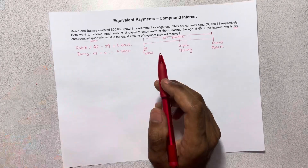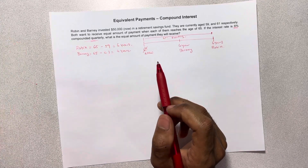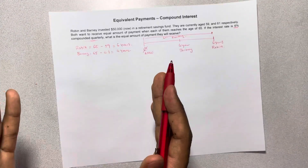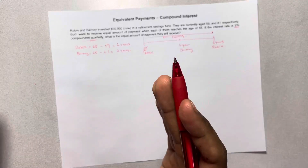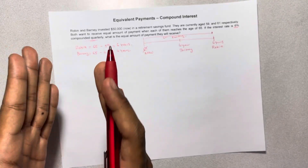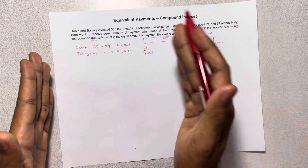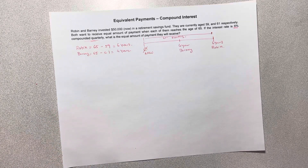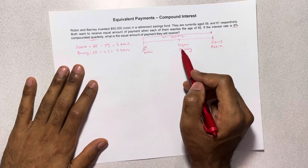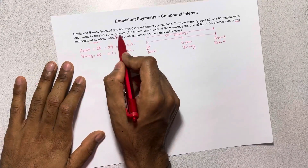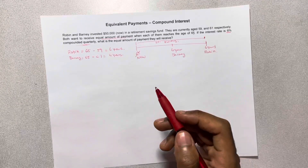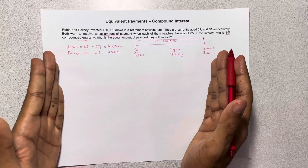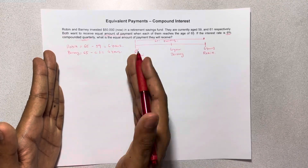Like in previous videos where I calculated future value and present value, we were given a specific time frame to calculate a value. In this case each of them are retiring at different time frames but they want an equal amount of payment. So it's up to us to decide a focal date — a focal date is used to calculate all our time value of money to that specific time point.